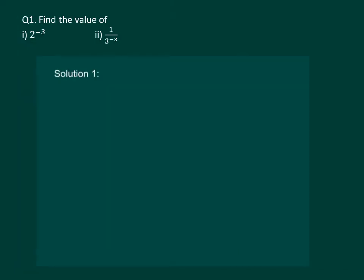Please read the question on the slide. We have to find the value of 2 to the power minus 3 and 1 by 3 to the power of minus 2. So let us start with the first part: 2 to the power of minus 3 is the same as 1 by 2 to the power of 3, which is equal to 1 by 2 into 2 into 2, which is equal to 1 by 8.